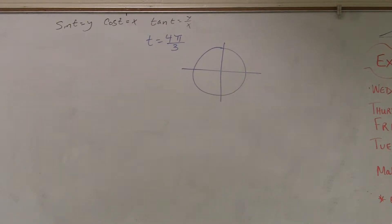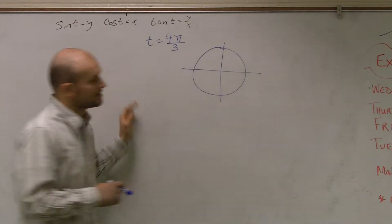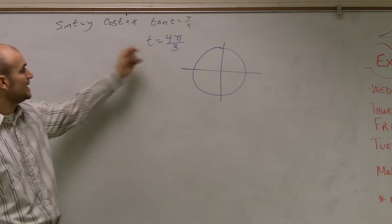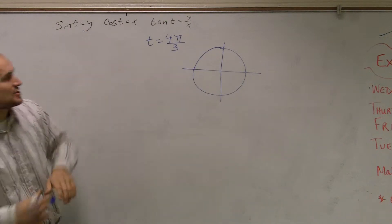But I'll still leave it up there. Alright, so they want us to evaluate our point t equals 4π over 3 for sine, cosine, tangent.